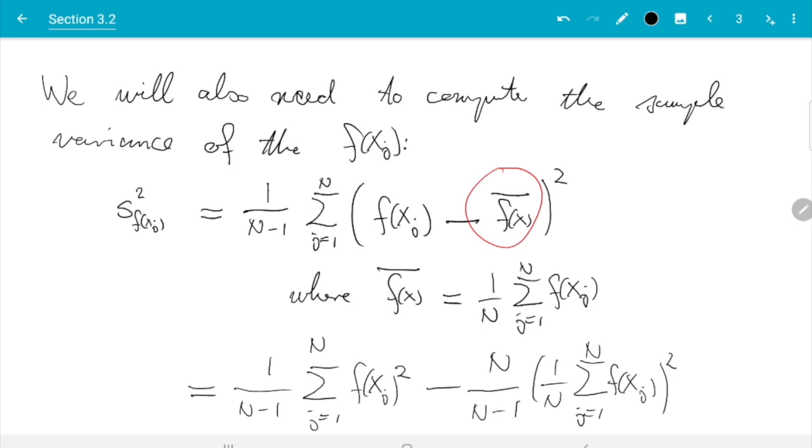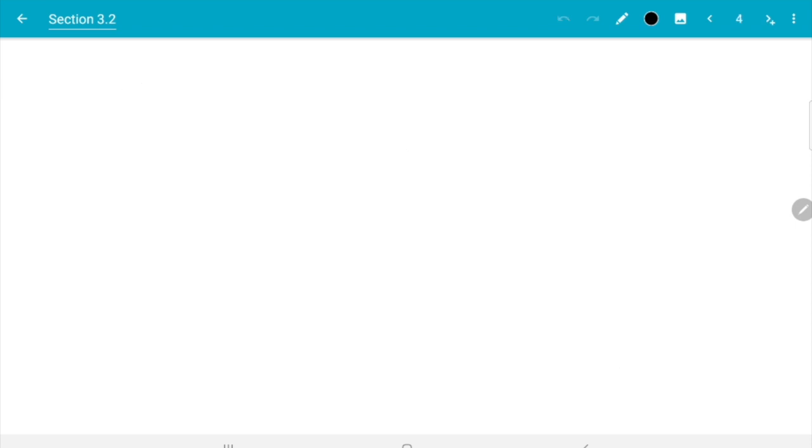The second formula looks very much like an average again, so we can use the same trick again. What we could do is now we need two variables. We could use s equals zero for the sum and say t equals zero for the sum of squares.